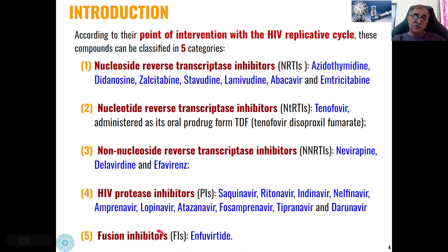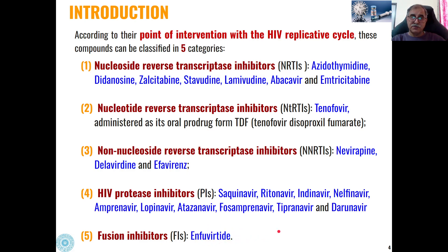The fifth category is fusion inhibitors, and fosamprenavir is the most commonly used fusion inhibitor for inhibition of the HIV replication cycle.